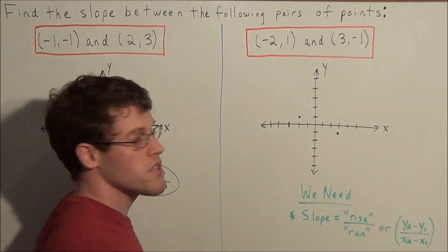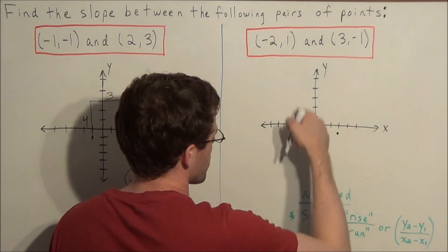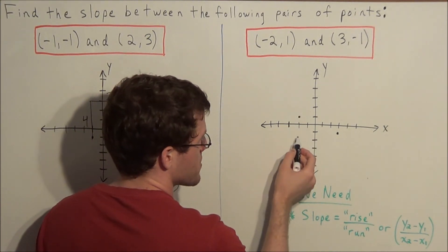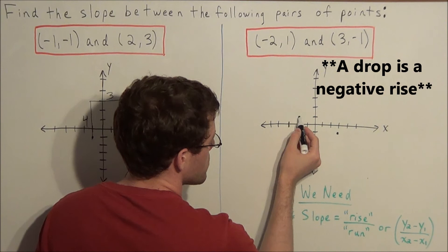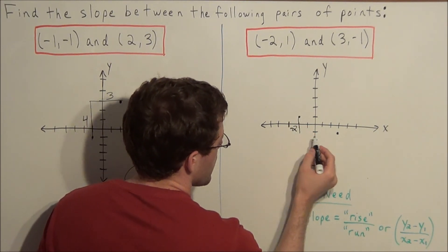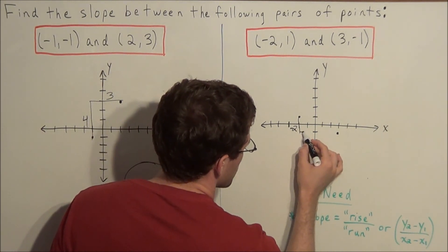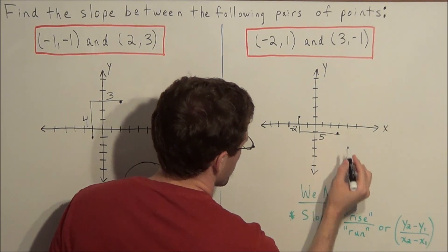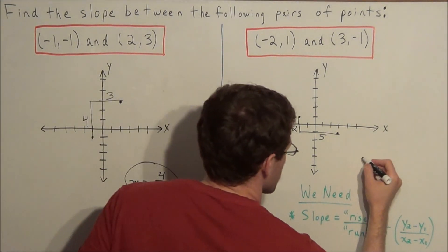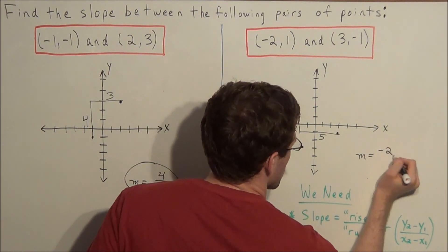So now to find the slope between these two points, we're going to use the concept of rise over run. How much do we need to rise? We need to rise one, two — but notice how we're dropping down, not rising up. So that means we're rising two in the negative direction — rising negative two. And we're going to run one, two, three, four, five, giving us a run of five. So our slope between the points negative two, one and three, negative one is m equals negative two over five.